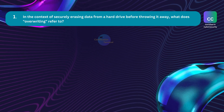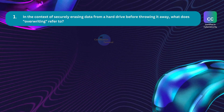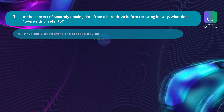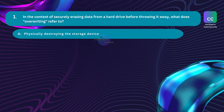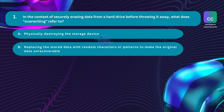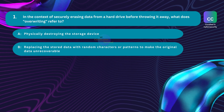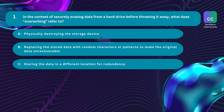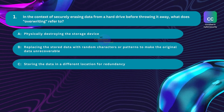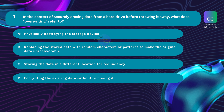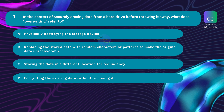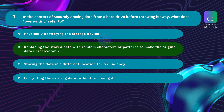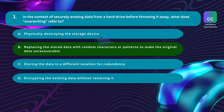Question number one: in the context of securely erasing data from a hard drive before throwing it away, what does overwriting refer to? Option A: physically destroying the storage device. Option B: replacing the stored data with random characters or patterns to make the original data unrecoverable. Option C: storing the data in a different location for redundancy. Option D: encrypting the existing data without removing it. The correct answer is option B: replacing the stored data with random characters or patterns to make the original data unrecoverable.